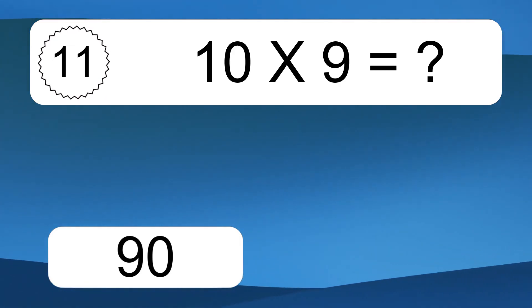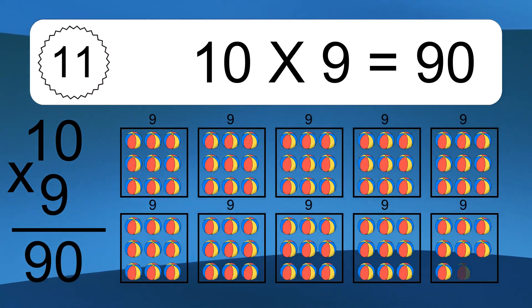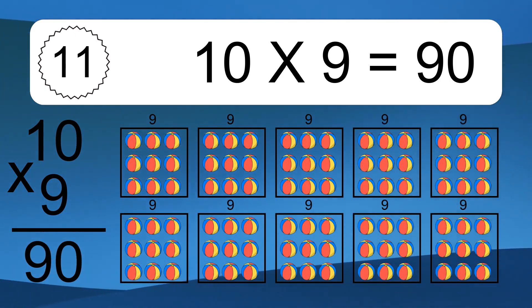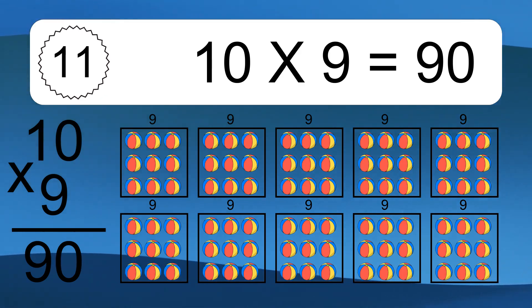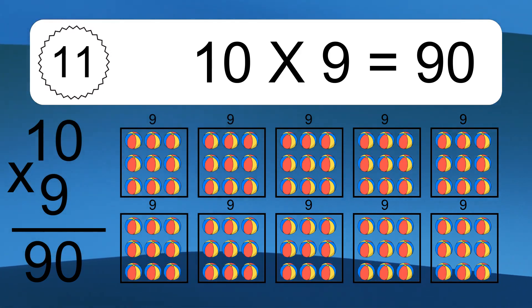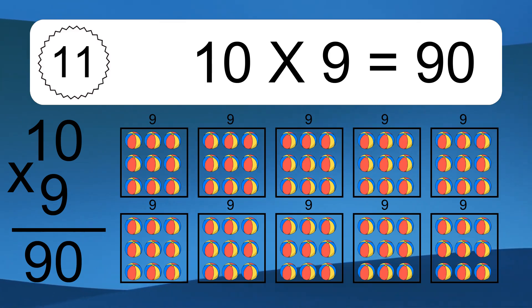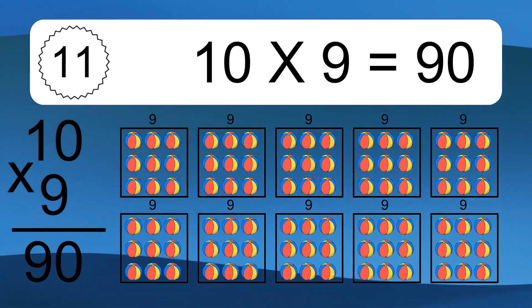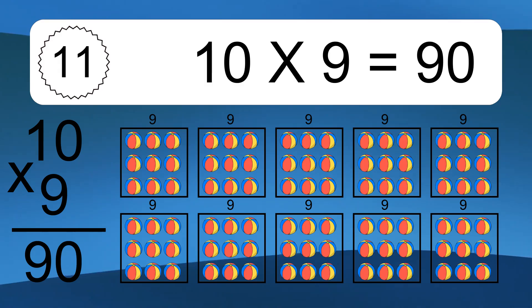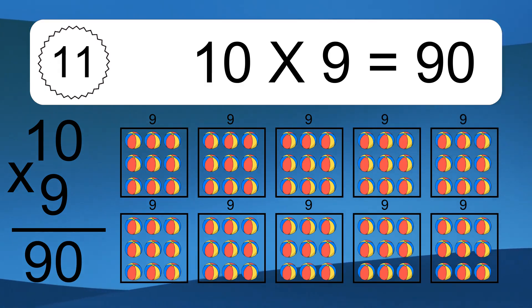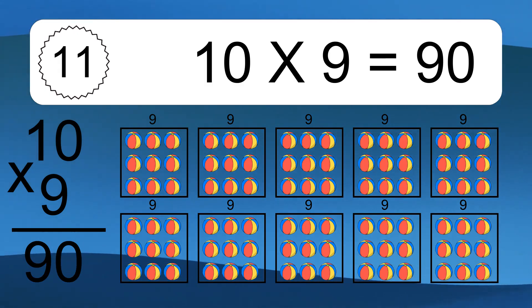10 times 9 equals what? 10 times 9 equals 90. We have 10 boxes, and each box has 9 colorful balls inside. If you count all the balls in all the boxes together, you will have 10 times 9 balls. This equals 90 balls.